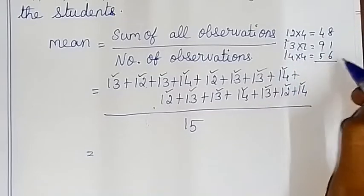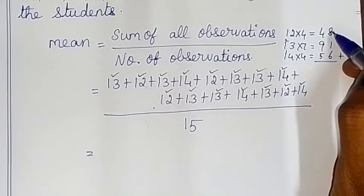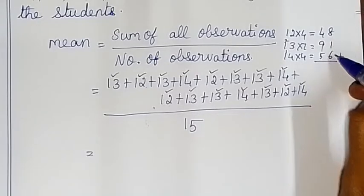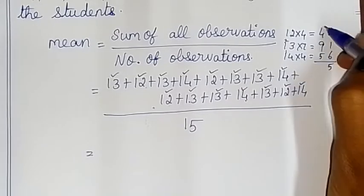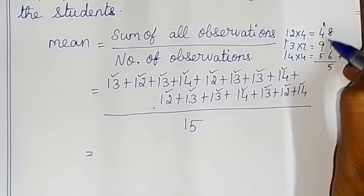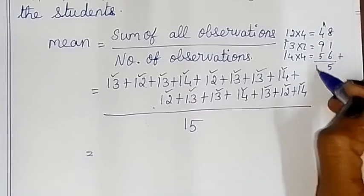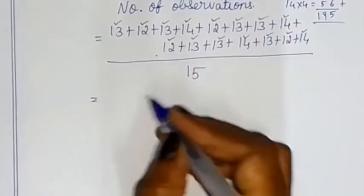If we add all the products, that is the total sum. So 48 plus 91 plus 56: 8 plus 1 is 9, 9 plus 6 is 15, carry 1; 4 plus 9 is 13, plus 1 carry is 14, plus 5 is 19; so the total is 195.